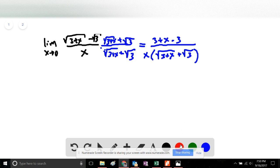We see here that the 3 minus 3 cancels out to 0, and we're left with x in the top, which can cancel with the x in the denominator, leaving us with the limit as x approaches 0 of 1 over the square root of the quantity 3 plus x plus the square root of 3.